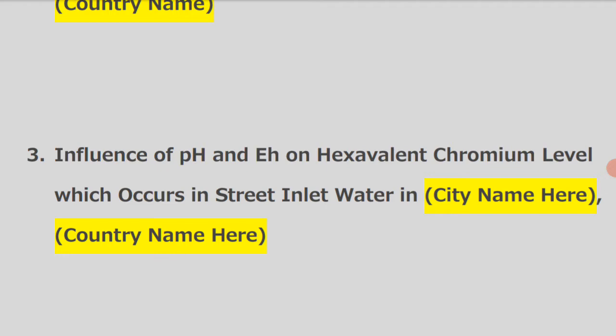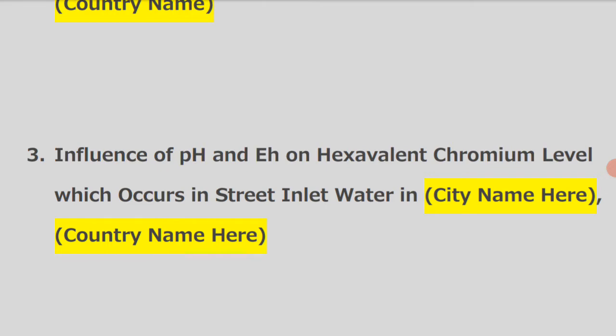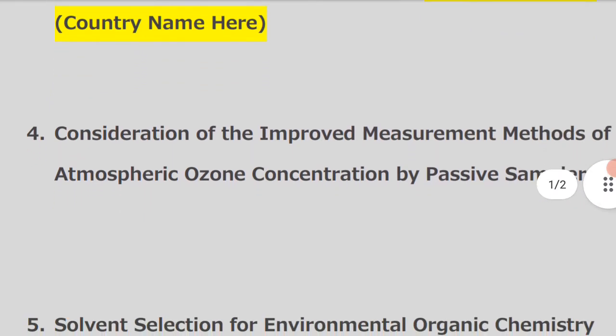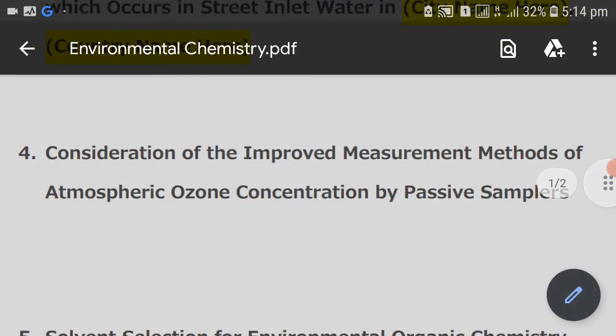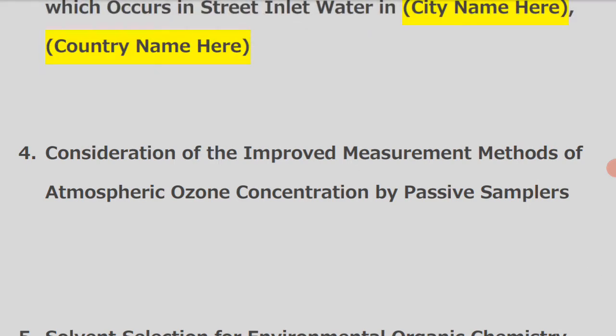Please remember, a research title should indicate complete information — where you conducted your research. So add the university name here; it's better to add the university name. The next one is: consideration of improved measurement methods of atmospheric ozone concentration by passive samplers.